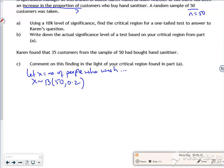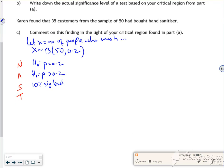So my null hypothesis is that H0: P equals 0.2. Now I'm expecting more, aren't I? So H1: P is greater than 0.2. My significance level is 10%. My tail, because it's greater than, is one-tail.